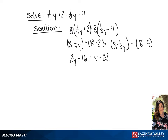Now we're going to subtract 16 from each side, giving us 2y equals y minus 48. Then we're going to subtract y from each side, giving us the solution of y equals negative 48.